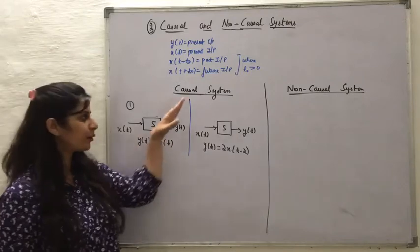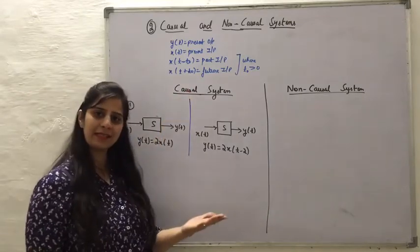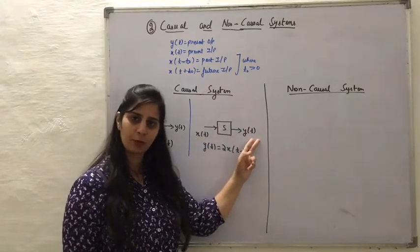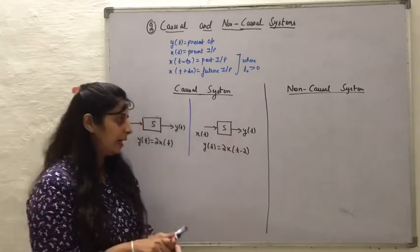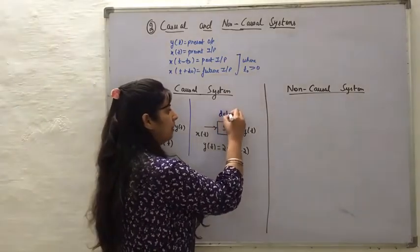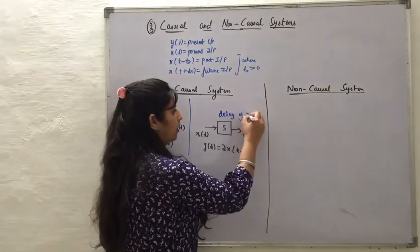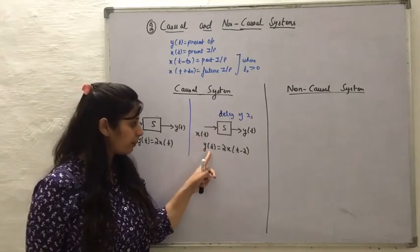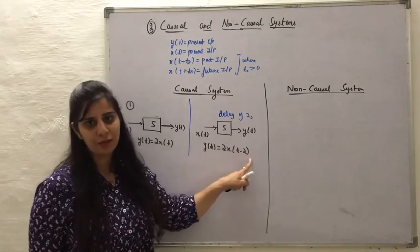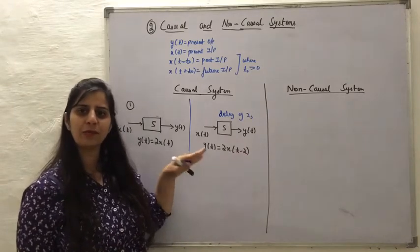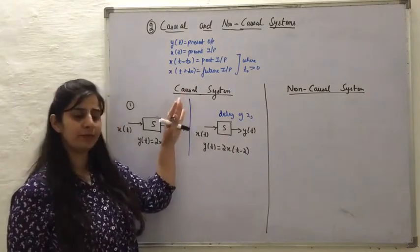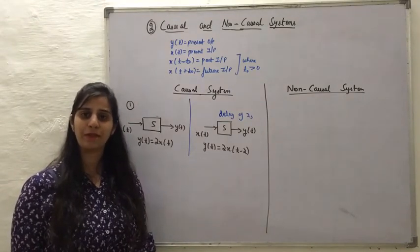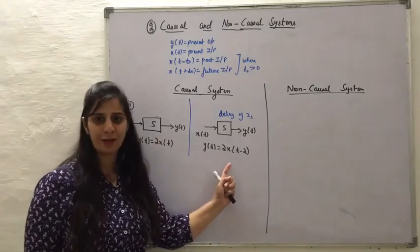Therefore this kind of system comes under the causal system. The second system takes x(t) as the input and produces y(t) as the output, but it introduces a delay of 2 seconds. Since it introduces a delay of 2 seconds, the present output is related to the past value of the input signal. So this kind of system also comes under the causal system. Therefore causal systems are those whose output response depends upon the present and the past values of the input.